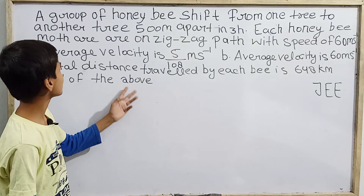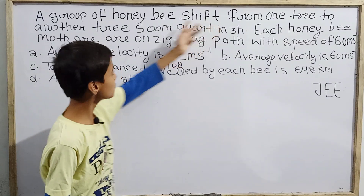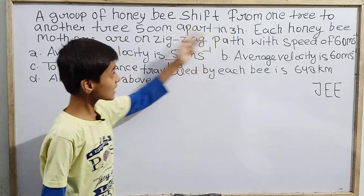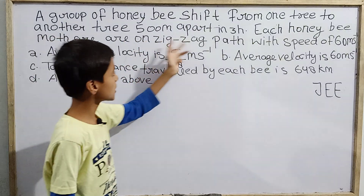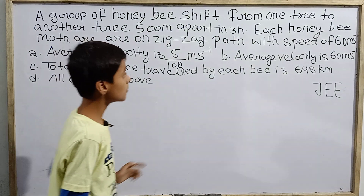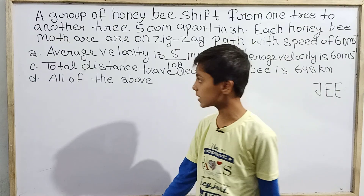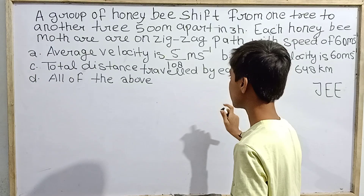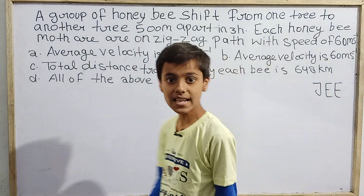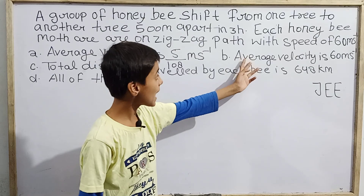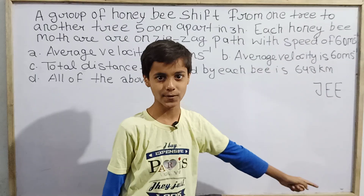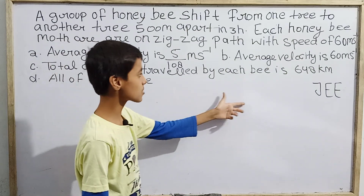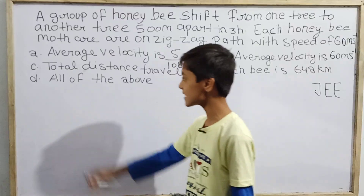The question states: a group of honeybees shifts from one tree to another tree 500 meters apart in three hours. Each honeybee moves on a zigzag path with a speed of 60 meters per second. Option A says the average velocity is 5/108 meters per second, option B says the average velocity is 60 meters per second, and option C says the total distance traveled by each bee is 648 kilometers.